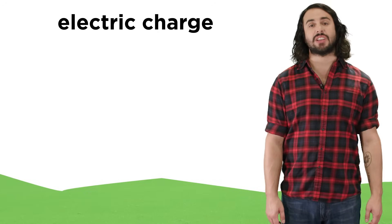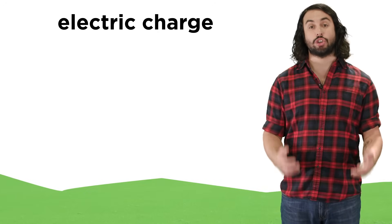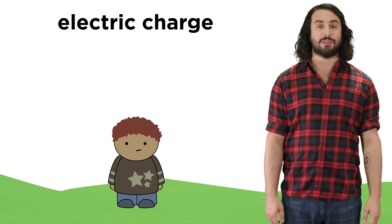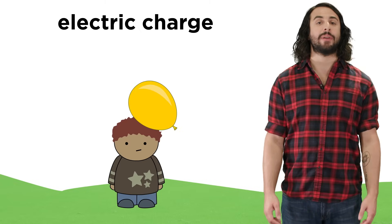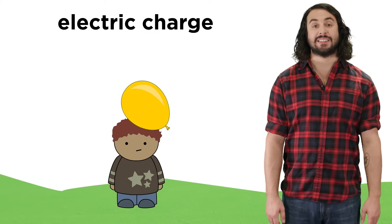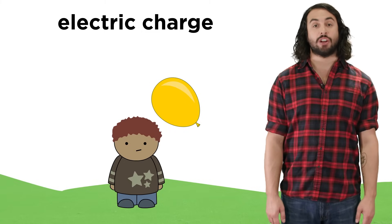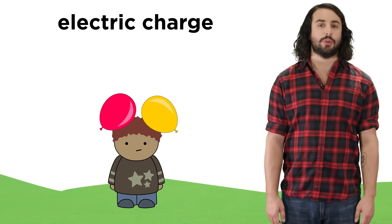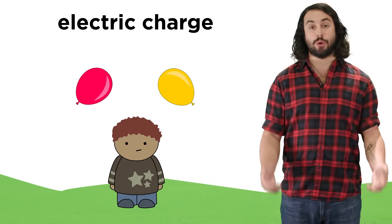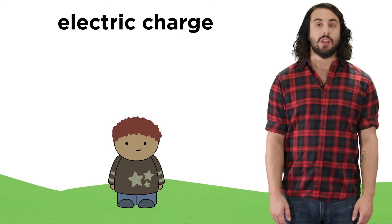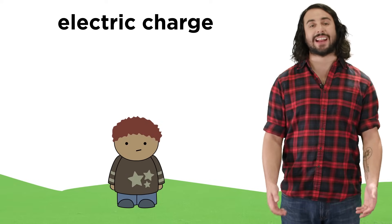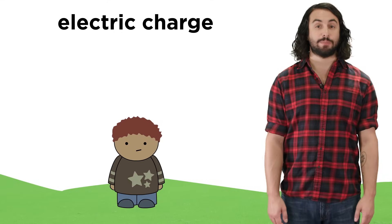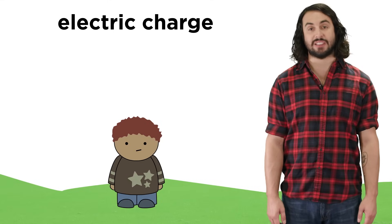First, we noticed that there was such a thing as electric charge. The easiest demonstration of this involves rubbing a balloon on your hair and seeing how the balloon will then attract your hair by some mysterious force. Two balloons that have been rubbed on your hair will strangely push each other away. This occurs because of electric charge, which is displaced by the rubbing together of these materials.